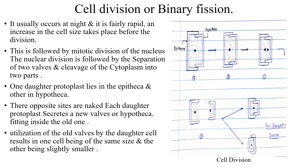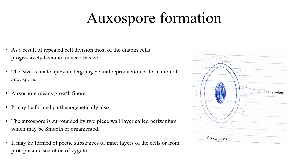When the cell size gets sufficiently reduced, the diatom cell undergoes sexual reproduction. Sexual reproduction takes place by the formation of a special type of spore called auxospore. As a result of repeated cell division, most diatom cells progressively become reduced in size. The size is restored by undergoing sexual reproduction and the formation of auxospore.